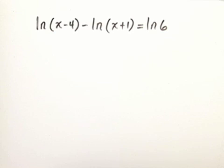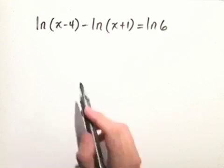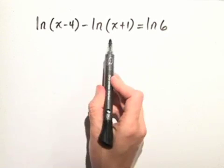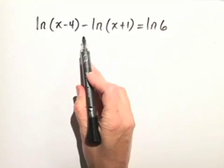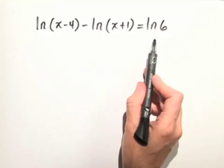Let's solve the natural log equation. Notice on the left hand side of this equation, we have two different natural logarithms with a minus sign in between them. On the right hand side, we just have one natural log.